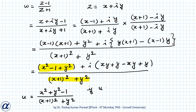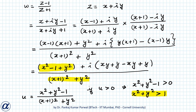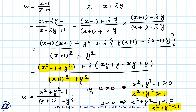If u is greater than 0, this implies x squared plus y squared minus 1 is greater than 0, or x squared plus y squared greater than 1. This denotes the region outside the unit circle. If u is less than 0, this implies x squared plus y squared less than 1, which is the region inside the unit circle.